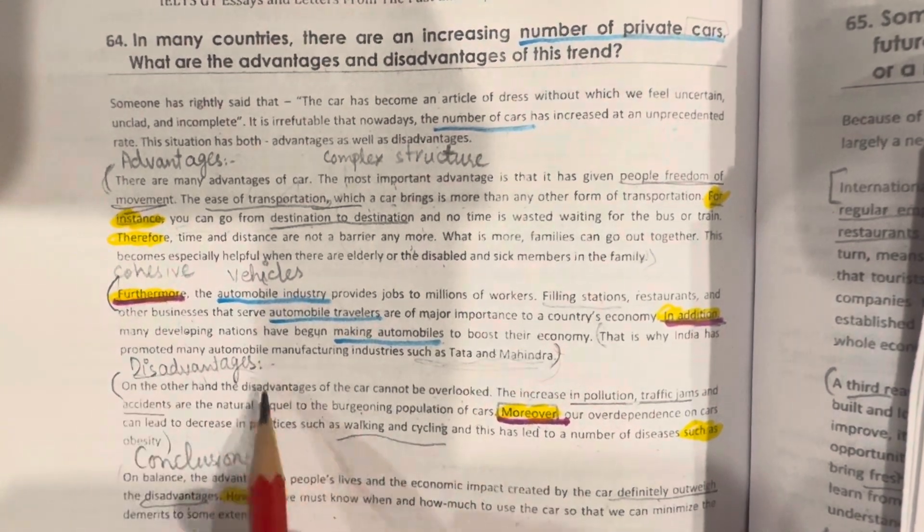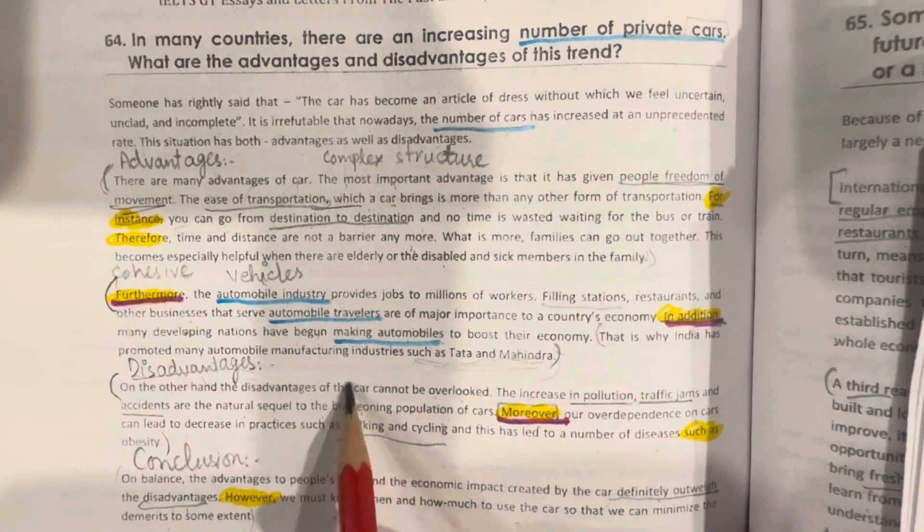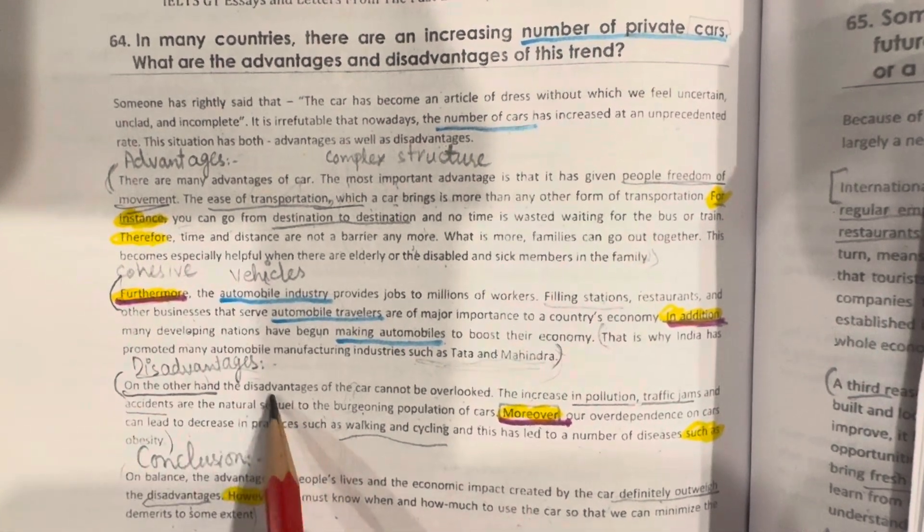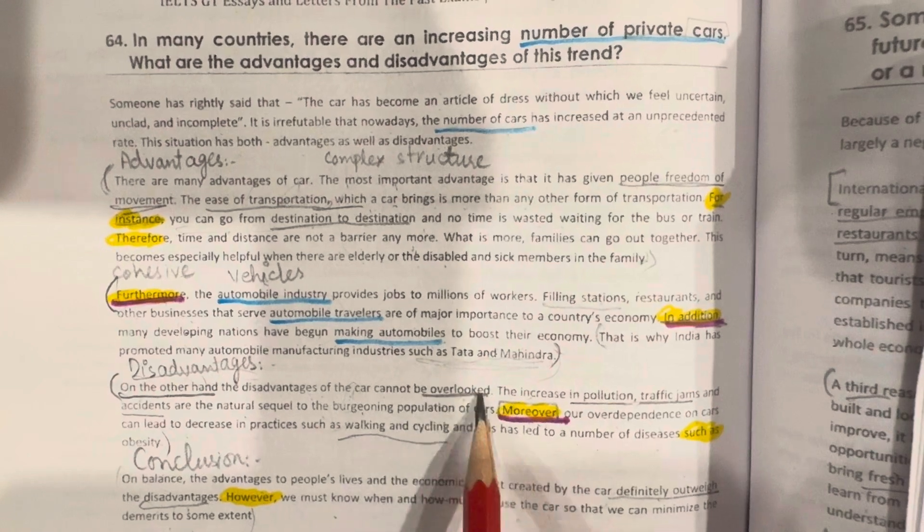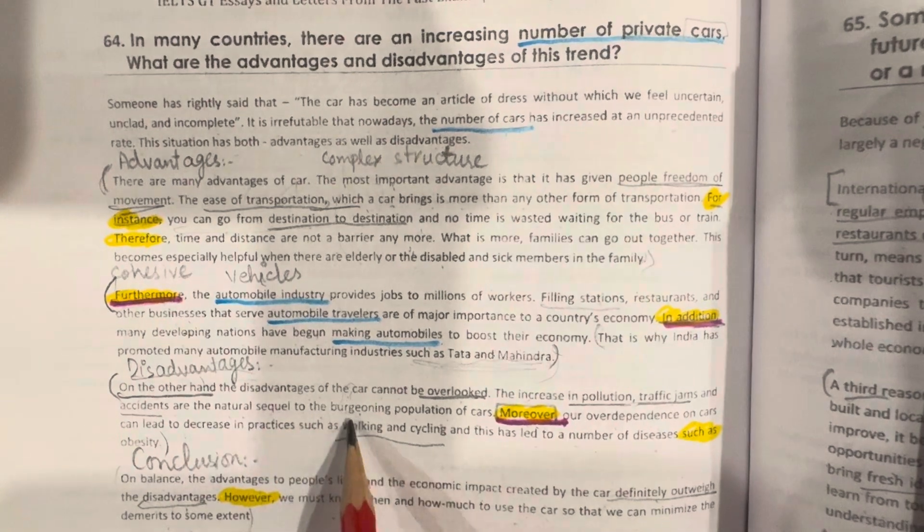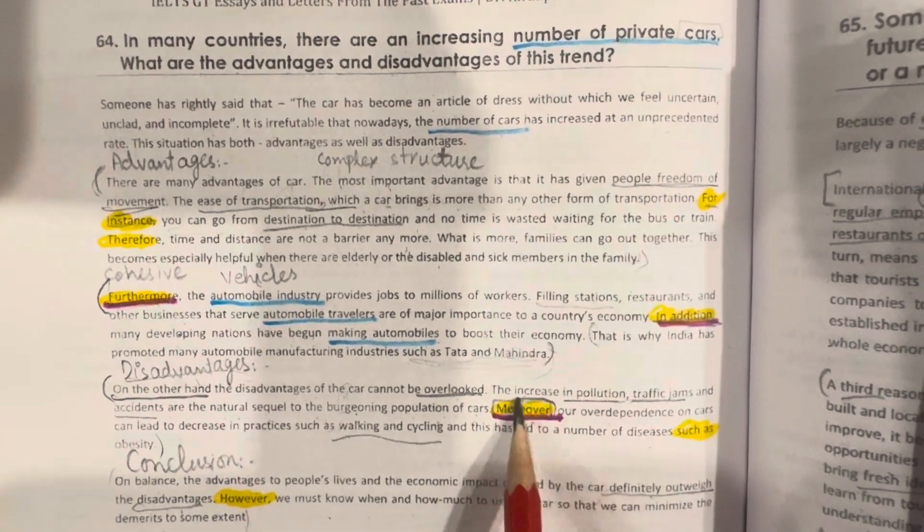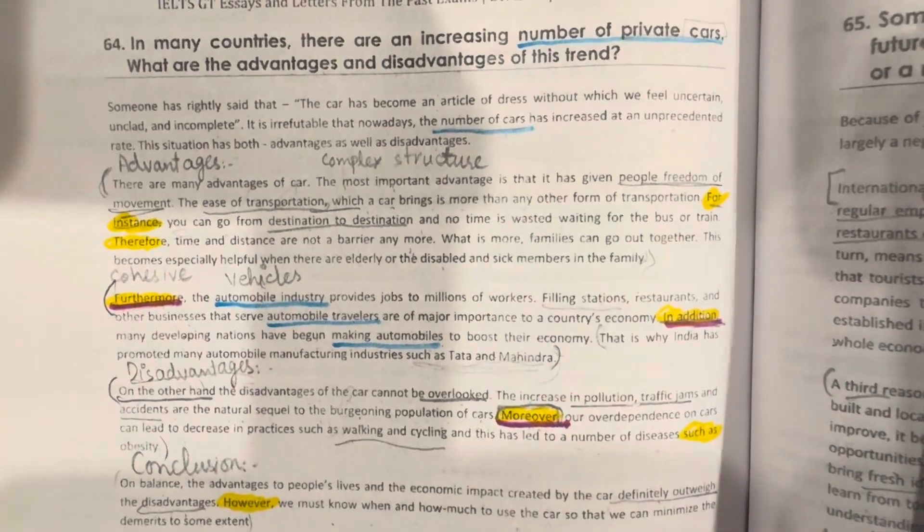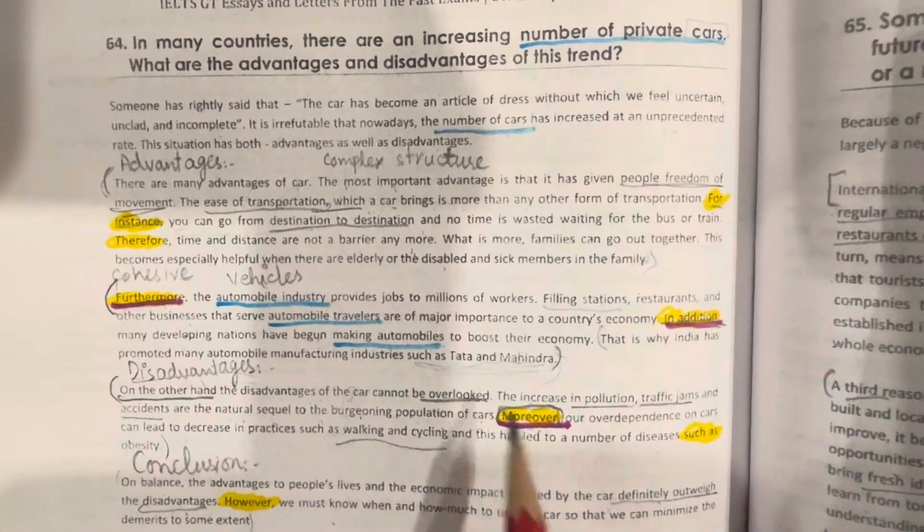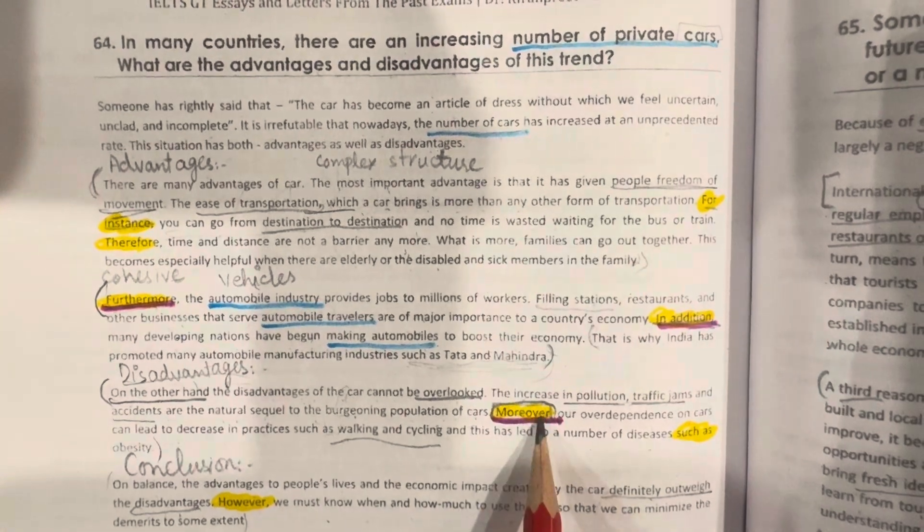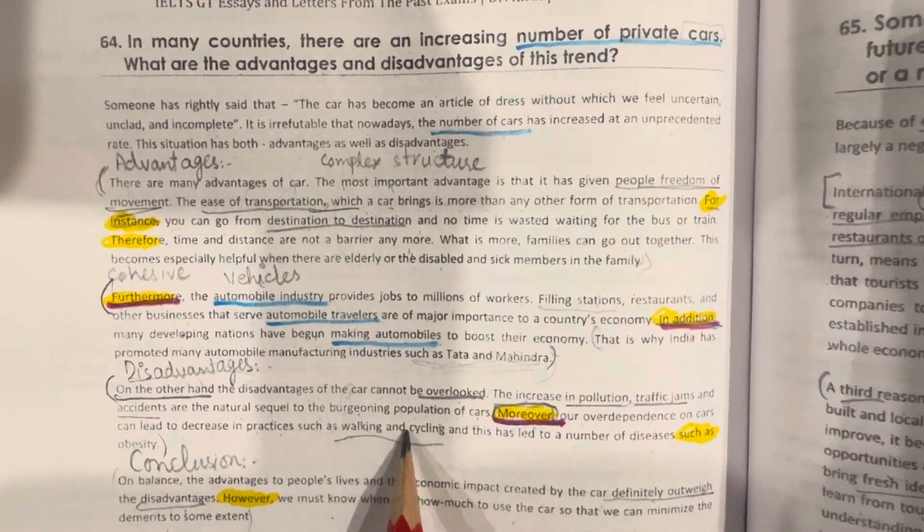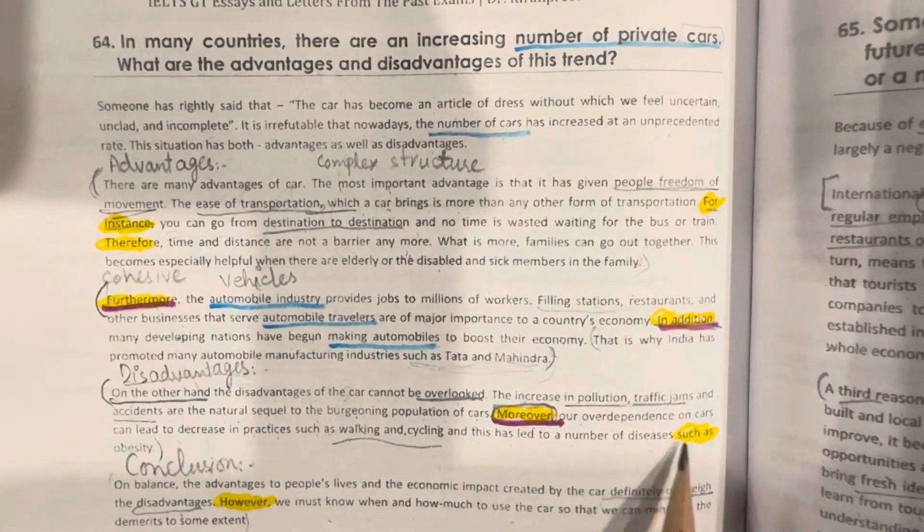We have discussed disadvantages in three lines. On the other hand, these are also linking words. On the other hand, the disadvantages of the car cannot be overlooked. The increase in pollution, traffic jams and accidents are the natural sequel to the burgeoning population of cars. This is moreover. Now, this is also an idea that we are adding. Adding ideas. We use furthermore and moreover. That's why we have written moreover. Over-dependence on cars can lead to decrease in practices such as walking and cycling, and this has led to a number of diseases such as obesity.